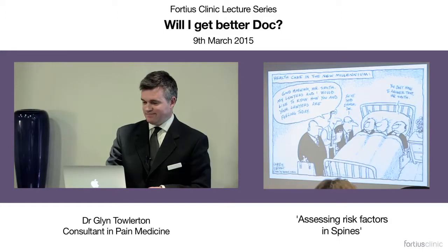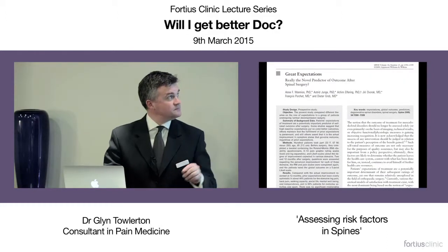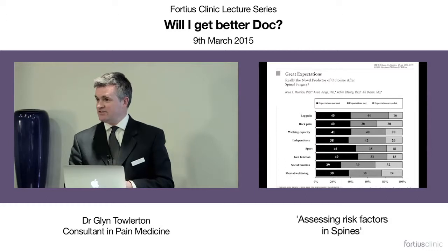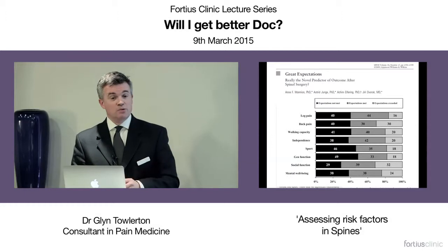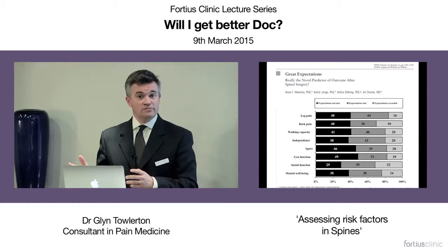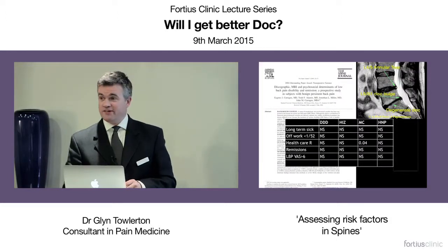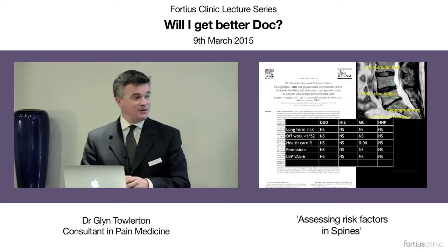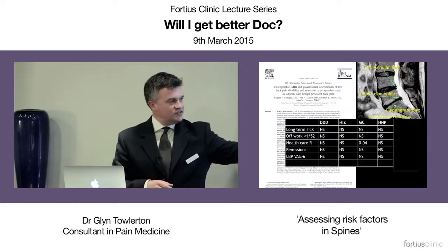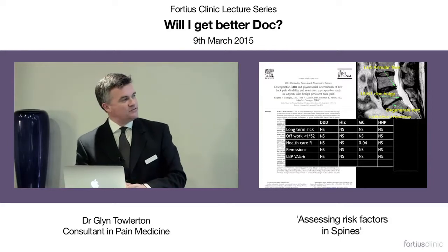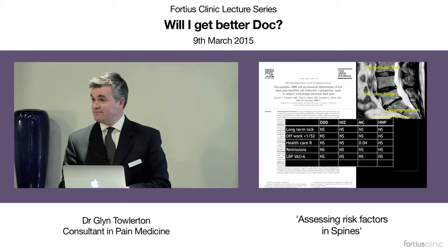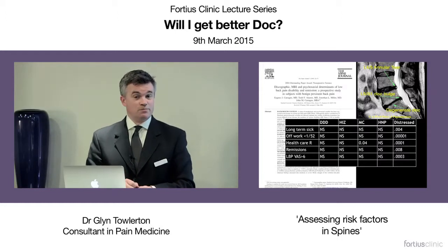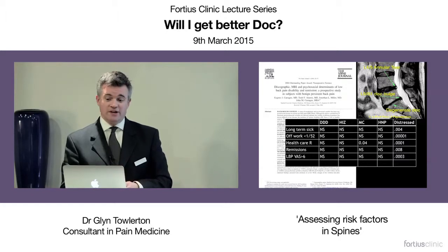Less than 20% of people having spinal surgery will feel their expectations have been exceeded, and 40% will feel expectations were not met. It's important to understand what the patient's goals are. When looking at disability and MRI, there is very little association. Degenerative disease, herniated discs, annular tears, and prolapsed discs show very little predictive value for long-term disability — apart from modic change. Distress is by far the greatest predictor of disability in spinal pain, so it's important to take that into account when setting outcome expectations.